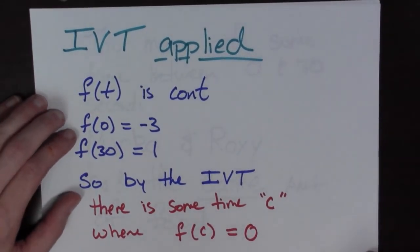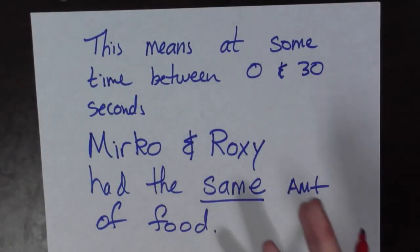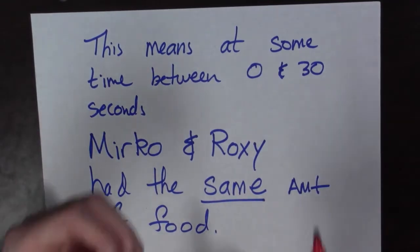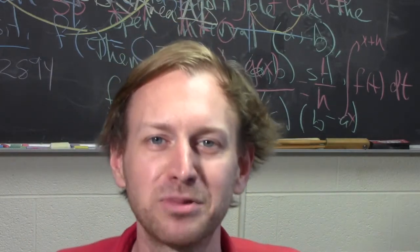Now you might say, well how does that help us? What does it mean to be zero? It means that at some time, Medical and Roxy had the same amount of food, because their functions are equal. So we've seen an application of the Intermediate Value Theorem. I know it's kind of a silly application with cats and cat food and stuff.